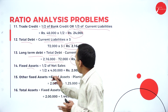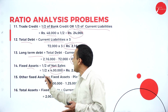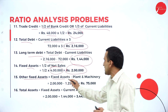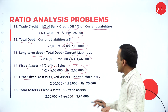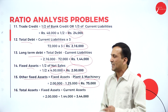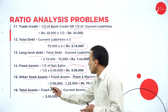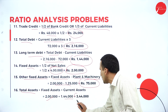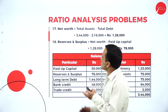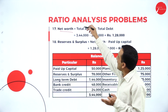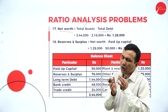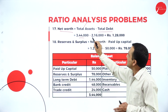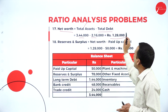Fixed assets are 1/2 of net sales: net sales is 4 lakhs, so fixed assets are 2 lakhs. Other fixed assets are fixed assets minus plant and machinery: 2 lakhs minus 1,25,000 gives 75,000 as other fixed assets. Total assets are fixed assets plus current assets: 2 lakhs plus 1,44,000 equals 3,44,000. Net worth is total assets minus total debt: 3,44,000 minus 2,16,000 gives net worth of 1,28,000.